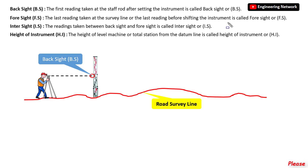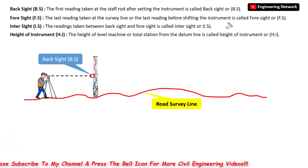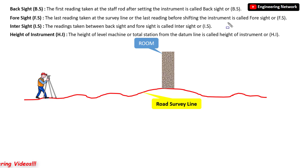Sometimes the back sight is also taken at the back of the level machine, which is also correct. So back sight is the first reading taken at the staff rod after setting the instrument. Now let's say that on this road survey line there is an obstruction in the form of a room and I cannot see anything behind it. In order to take the remaining readings till the end of the survey line, I have to shift the instrument. The final reading taken right before shifting the instrument is called foresight. So if the staff rod is installed right in front of this room, the reading on that staff rod will be considered the foresight.